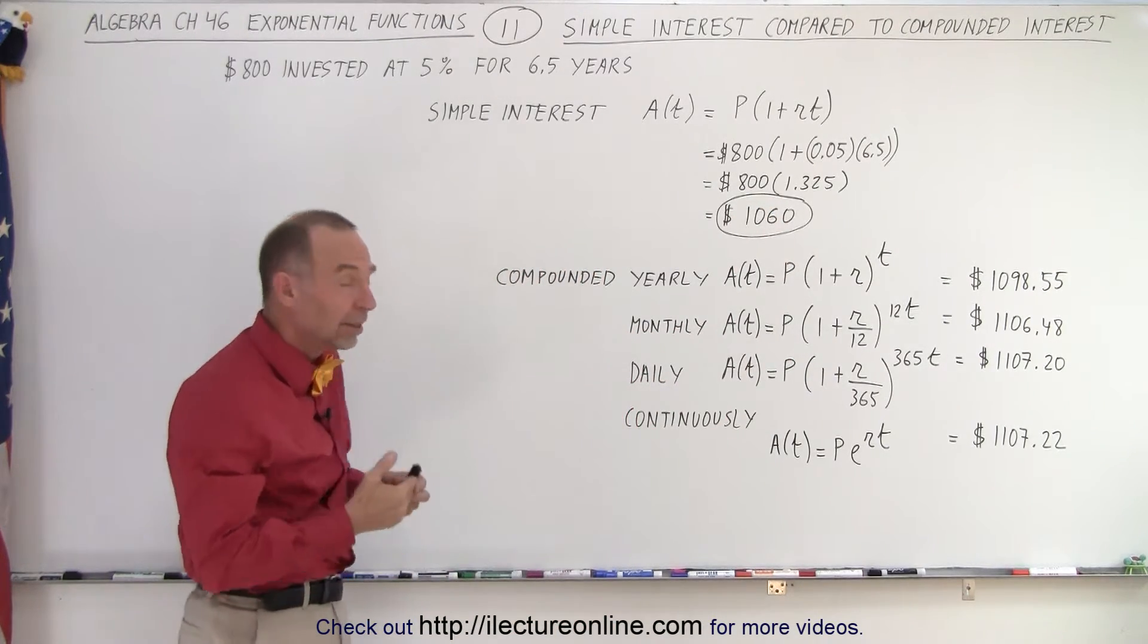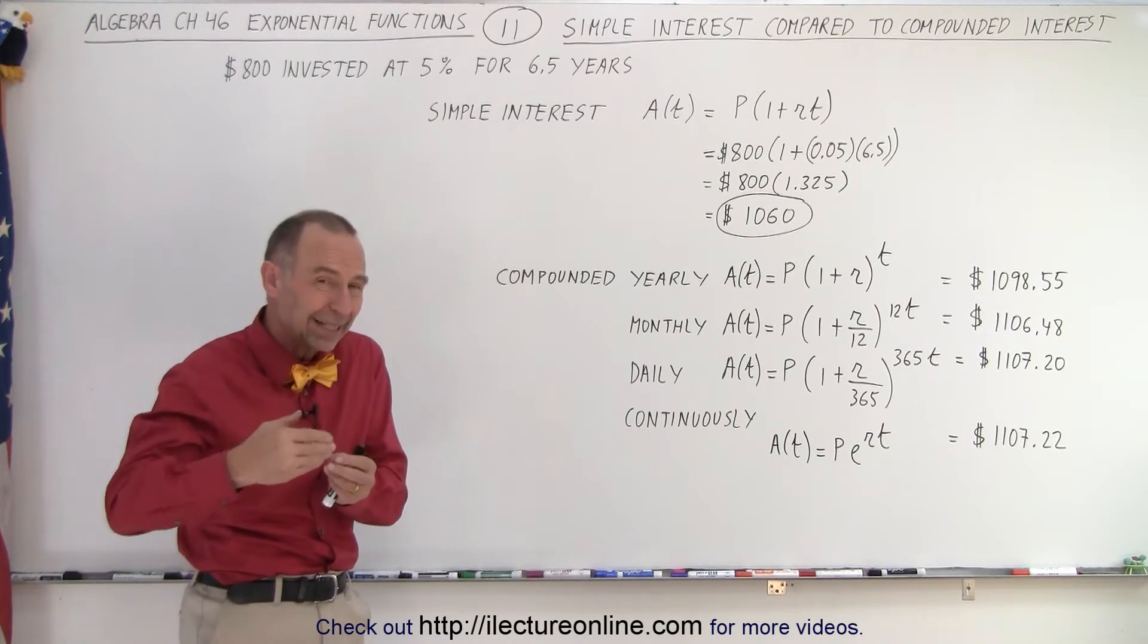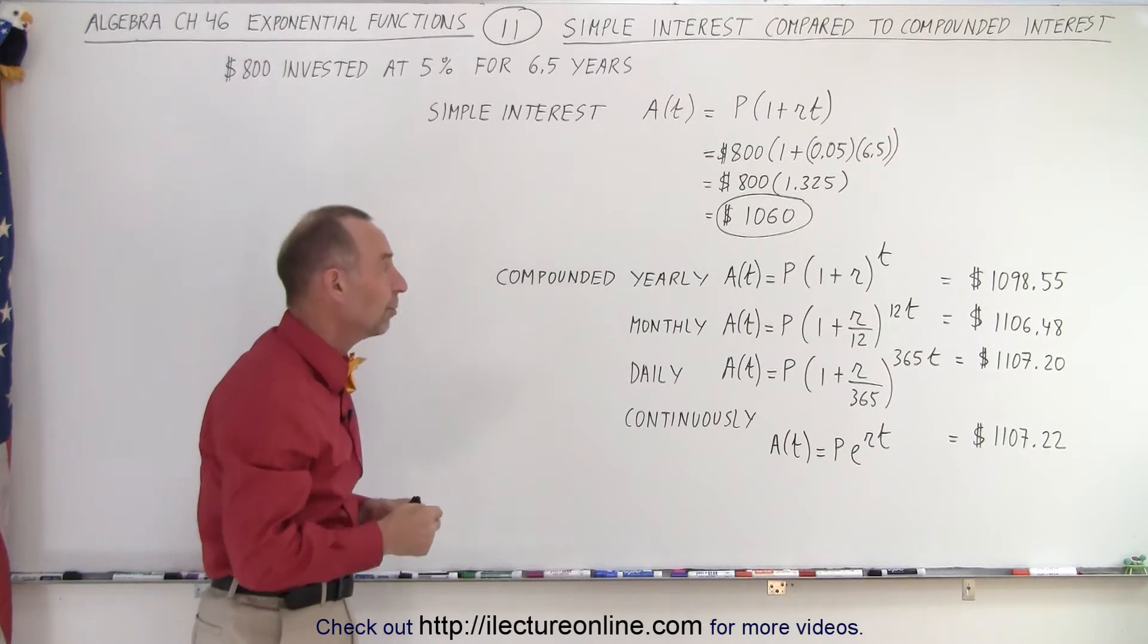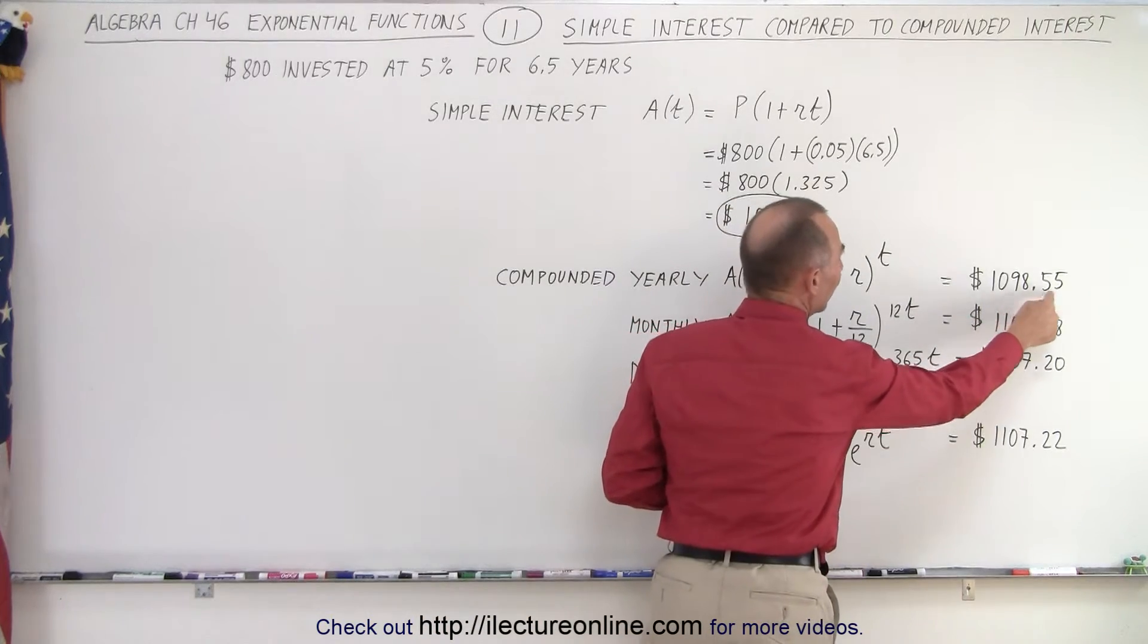But if you compound it yearly, which means that every year you calculate the interest and then you add it to the principal, you will end up with $1,098.55.